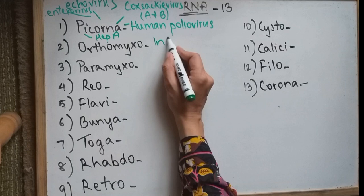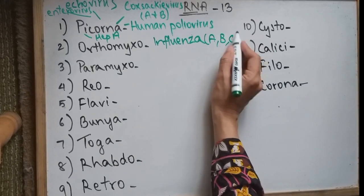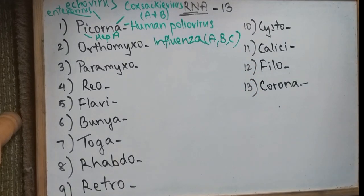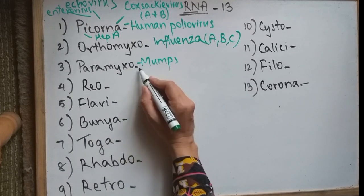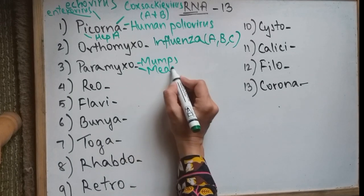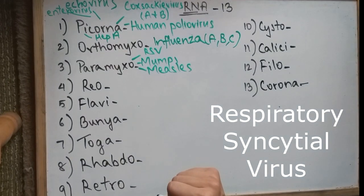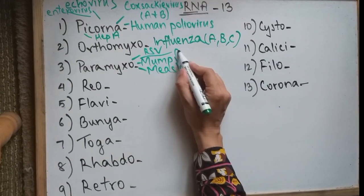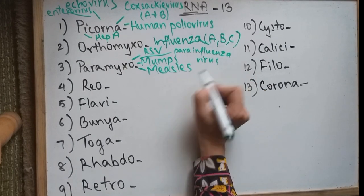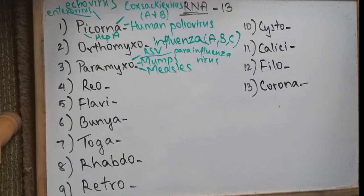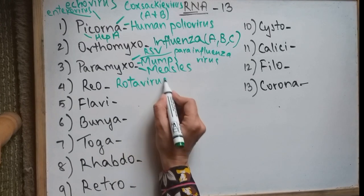And the last one in Picornaviridae is Hepatitis A virus which causes Hep A. Orthomyxo has the influenza virus — types A, B, and C — which causes influenza. Paramyxo has the mumps virus causing mumps or parotitis, the measles virus causing measles, the respiratory syncytial virus causing respiratory diseases, and the parainfluenza virus causing influenza-like disease. Reoviridae has rotavirus which causes gastroenteritis.